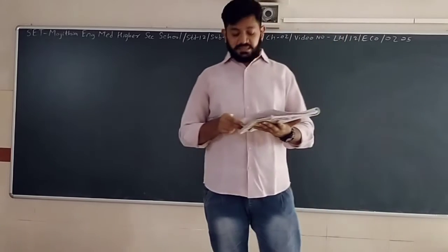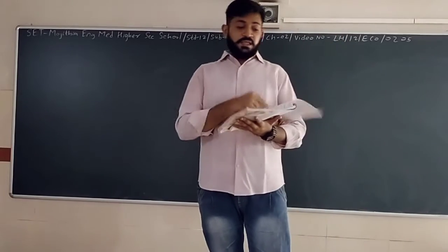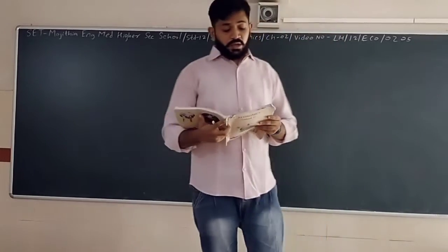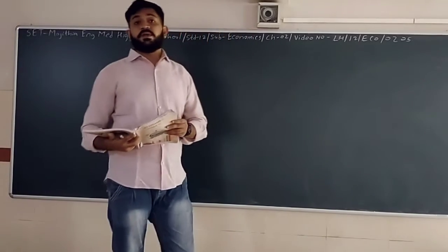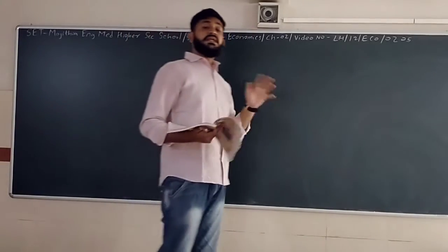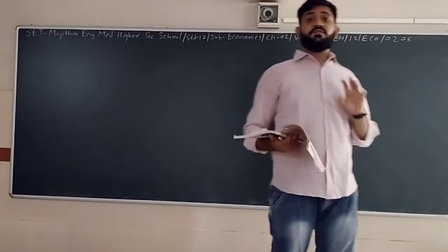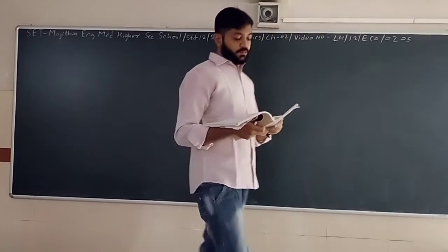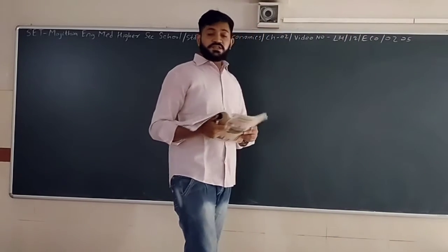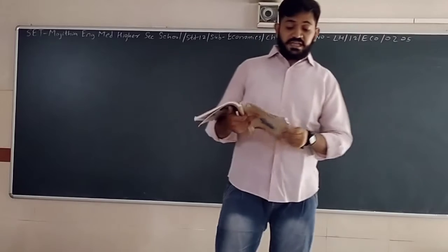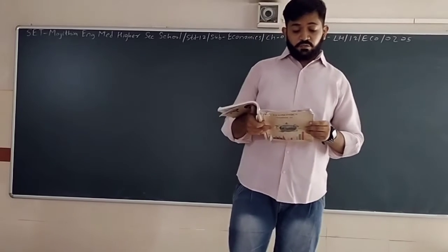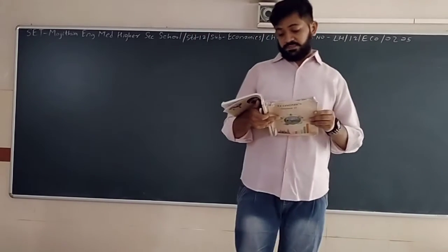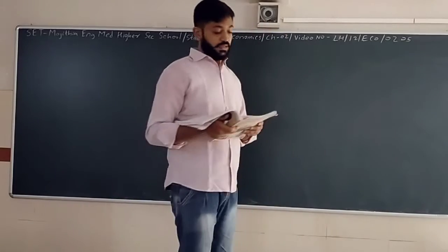To make it simple and easy, instead of individual values, we find the average of all these values. We are finding an average value for all three aspects. The first is life expectancy, the second is educational achievement, and the third is income — that is, the standard of living.